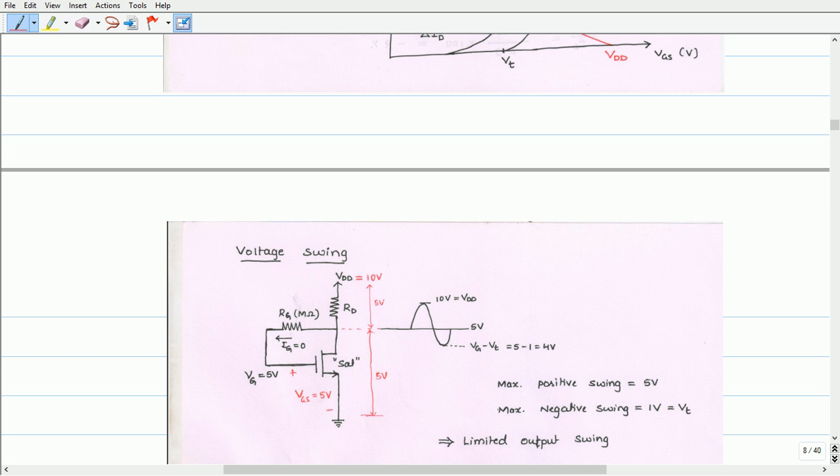This circuit can be utilized as a common source amplifier by applying the input voltage signal to the gate via a coupling capacitor. The output can be taken to the next circuit via another coupling capacitor so that the DC bias conditions already established will not get disturbed.